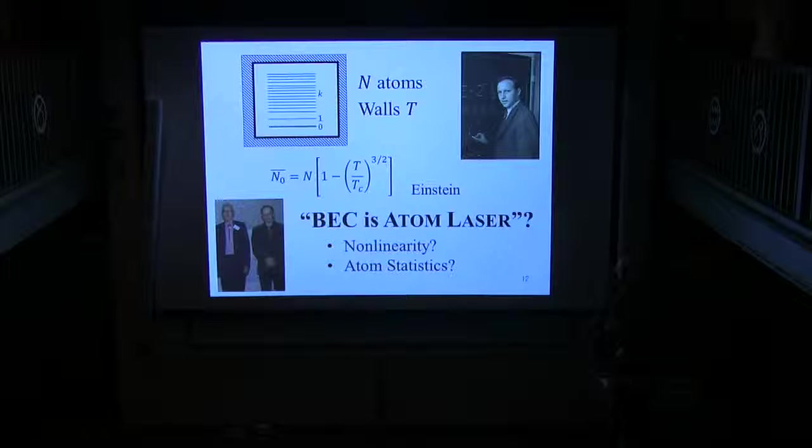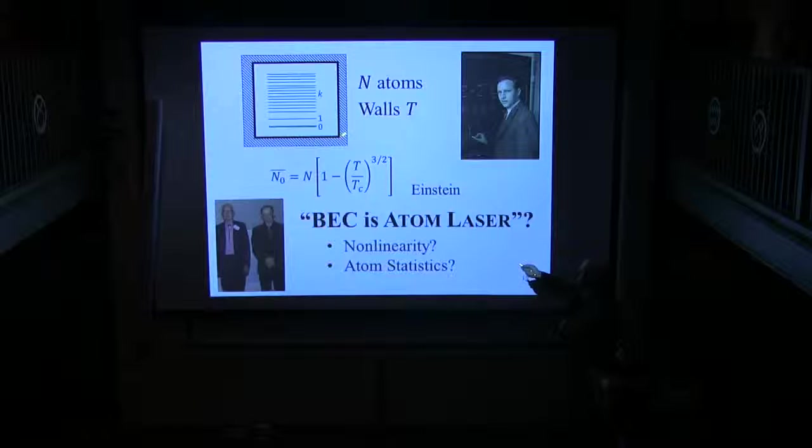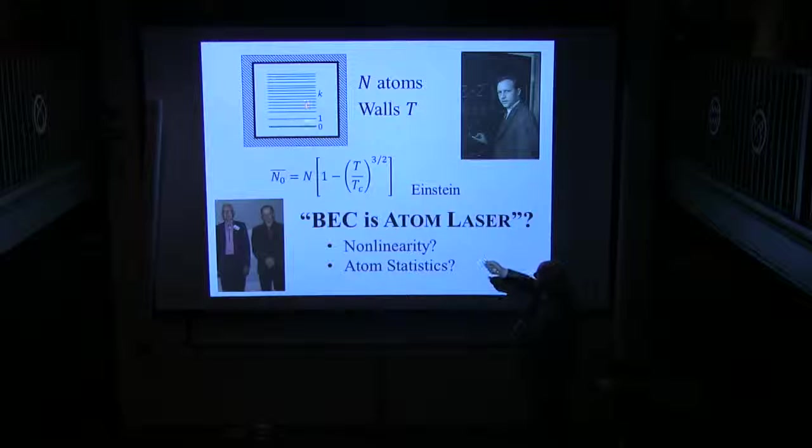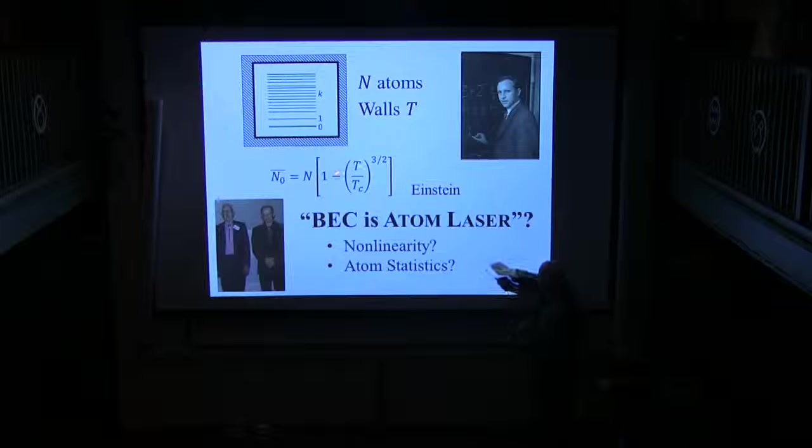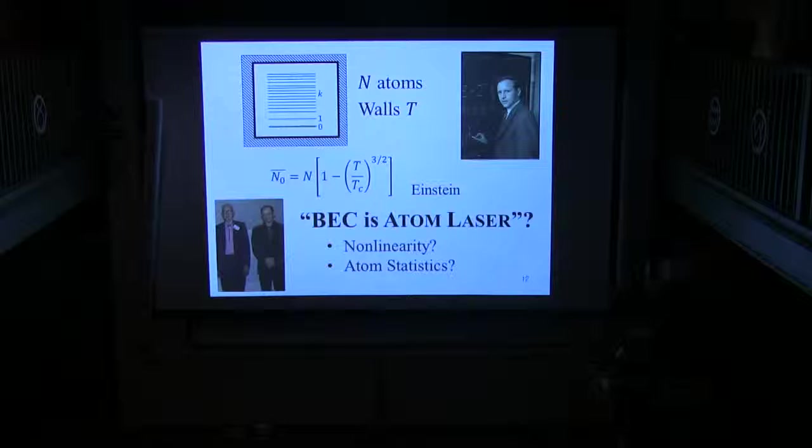So let's take the Reppy problem. So he has a box with N atoms in the box. And you ask how many atoms are in the ground state as compared with the excited states. So that's the condensate. And so Einstein teaches us that the average number of particles in the ground state is the total number in the box times 1 minus T over the critical temperature, the 3 halves.